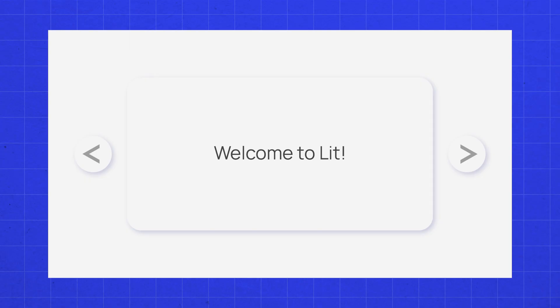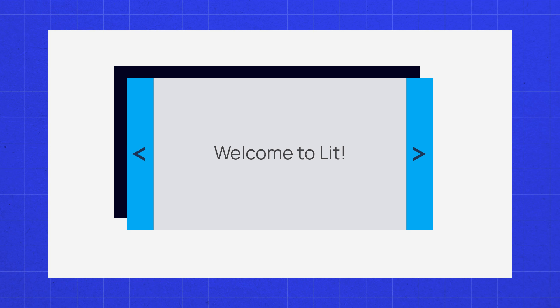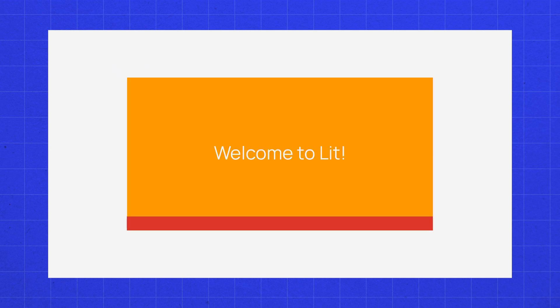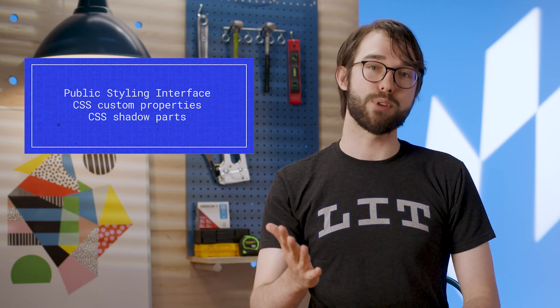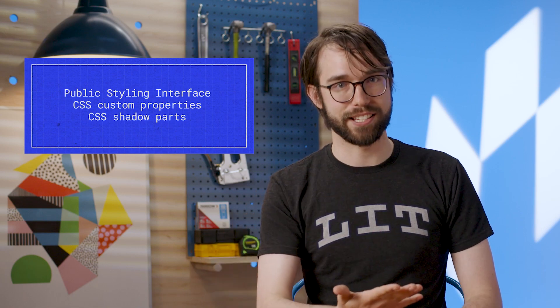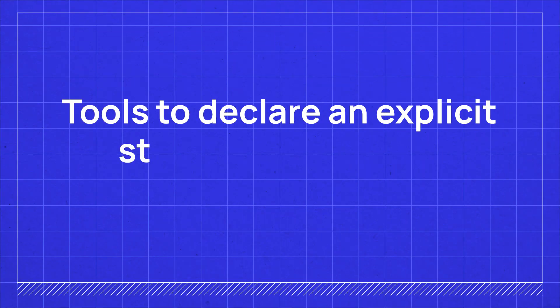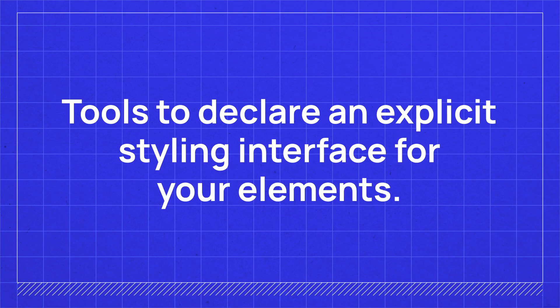TLDR, it's a tiny, fast library for building web components that work everywhere with any framework or none at all. In this video, we will apply two tools to make it so our simple carousel element can be customized. We will define a public styling interface for our simple carousel element using CSS custom properties and CSS shadow parts. By the end, you'll have the tools needed to declare an explicit styling interface for your elements, and if you're using web components, you'll know how to look for and use those tools to customize their styling.